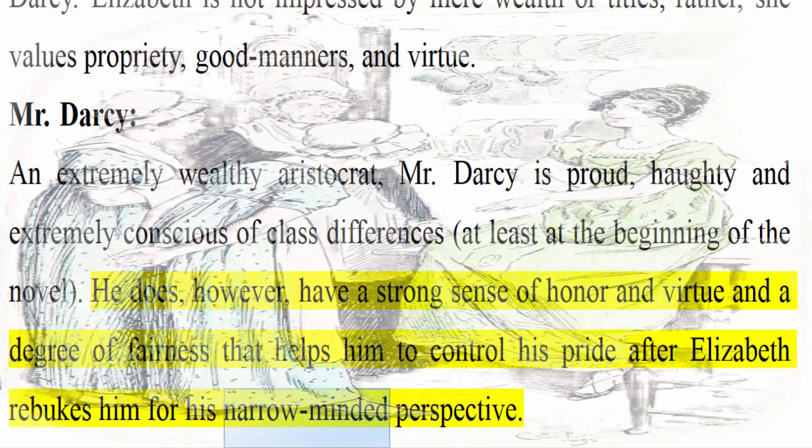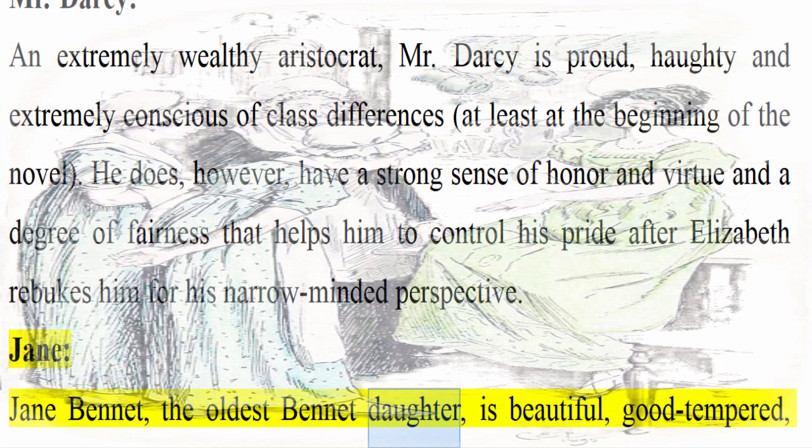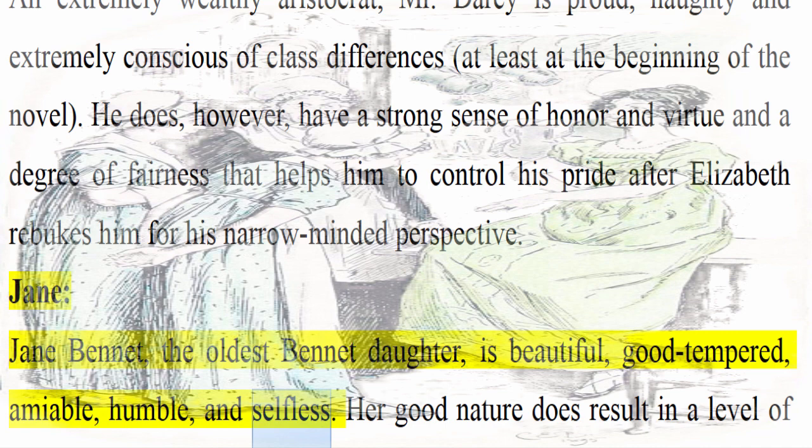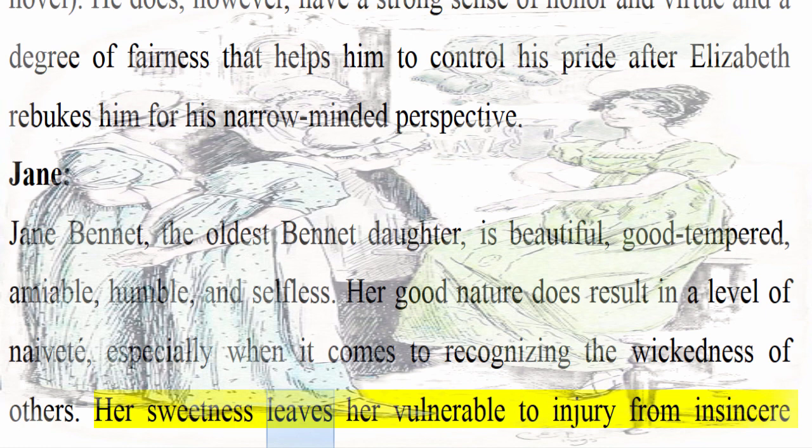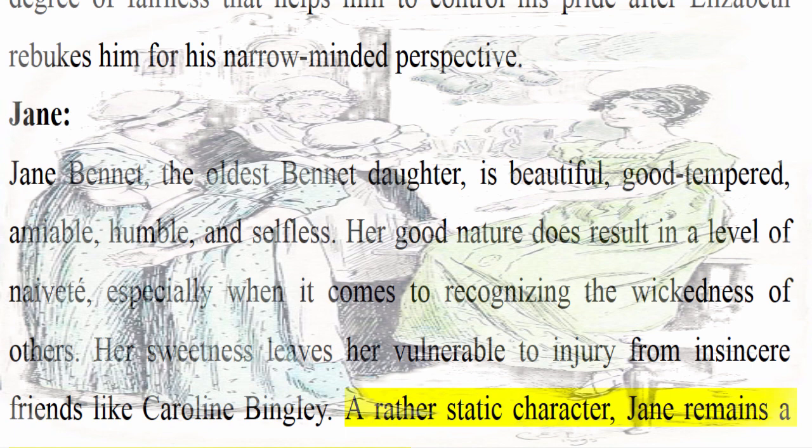Jane: Jane Bennet, the oldest Bennet daughter, is beautiful, good-tempered, amiable, humble, and selfless. Her good nature does result in a level of naivete, especially when it comes to recognizing the wickedness of others. Her sweetness leaves her vulnerable to injury from insincere friends like Caroline Bingley. A rather static character, Jane remains a model of virtue throughout the novel.